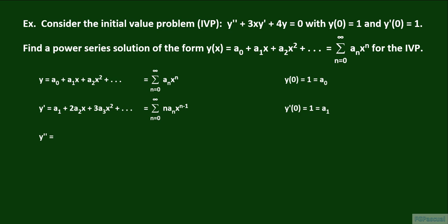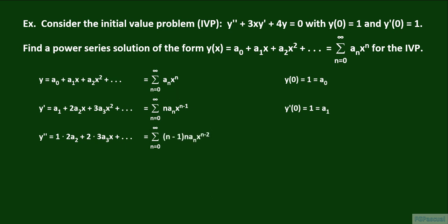We obtain y double prime in exactly the same fashion. The derivative of a sub 1 is 0, the derivative of 2 a sub 2 times x is 1 times 2 times a sub 2, and the derivative of 3 a sub 3 x squared is 2 times 3 times a sub 3 times x, and so on. In summation form, y double prime equals the sum from n equals 0 to infinity of n minus 1 times n times a sub n times x to the n minus 2 power.